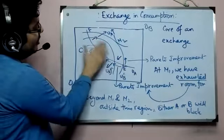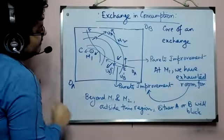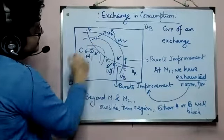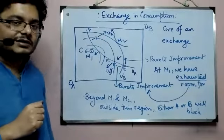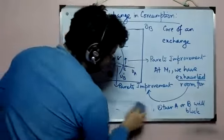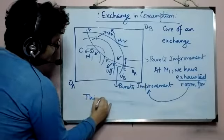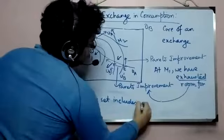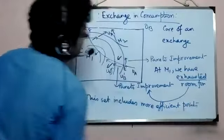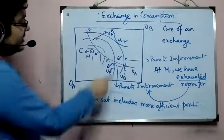So if we start from E, and given a point F, then asking for Pareto improvement, the only region we can stay within is this lens-shaped region. All the points in the region between M1, M2, E, and F are making some Pareto improvement over E — excluding F itself. So excluding F, all the points within this region are making some Pareto improvement, and because they are making Pareto improvement, this set includes more efficient points — at least more efficient than E in the sense of Pareto.